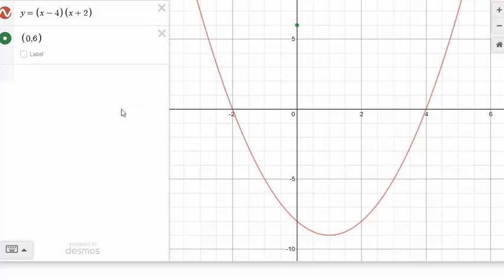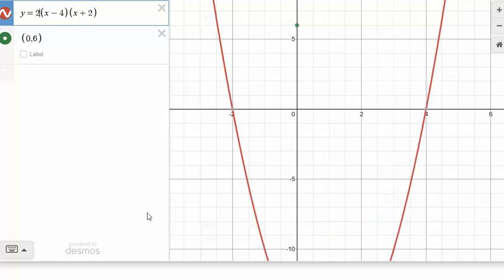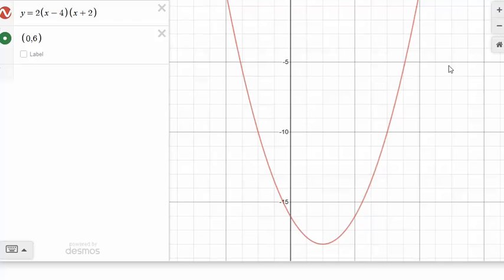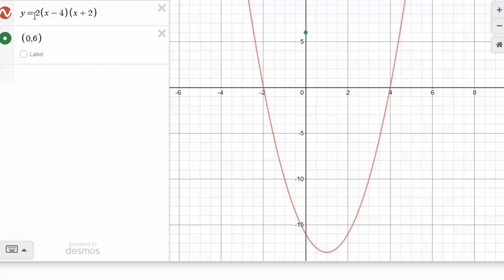Well, what we need to do is manipulate the a value. If you think about a quadratic equation is ax² + bx + c, that a value is something we would multiply in front here. Let's just mess with this a little bit. Let's say I put a 2 in here. I just times that by 2. Look what happened. I still have the same x-intercepts, but I have a different y-intercept. It got lower. Let's put in a half. I still have the same x-intercepts, but now I have a different y-intercept.